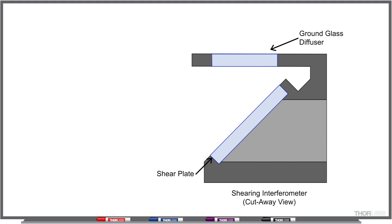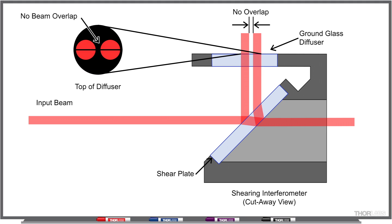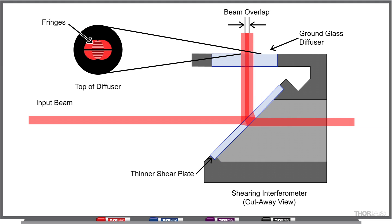I want to point out that if the shear plate is thick and the beams are smaller, then you actually won't get any overlap at the ground glass plate on the top of the device. In that case, there is no interference pattern to indicate whether the input beam is collimated. It is important to make sure the beam size matches the recommendation of the shear plate you're using.